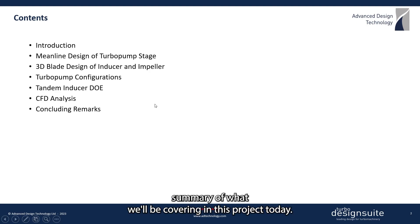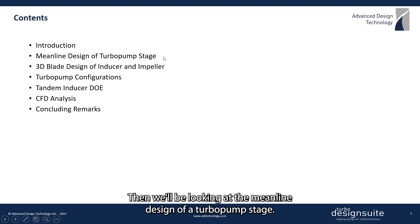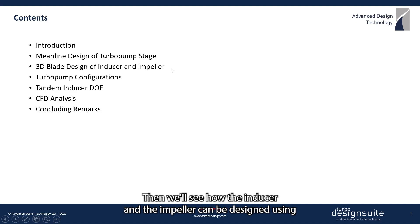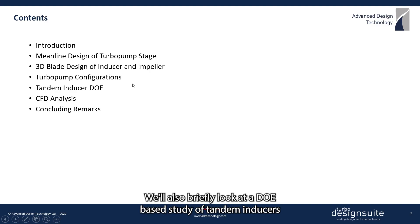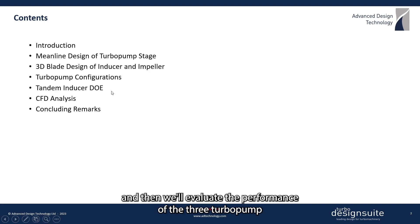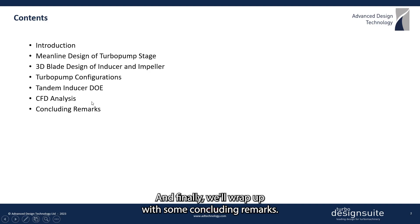Here's a summary of what we'll be covering in this project today. We'll start with a brief introduction to the inverse design method, then look at the mean line design of a turbopump stage. We'll see how the inducer and impeller can be designed using the 3D inverse design approach for three different turbopump configurations. We'll also briefly look at a DOE-based study of tandem inducers, then evaluate the performance of the three turbopump configurations based on a CFD analysis, and finally wrap up with some concluding remarks.